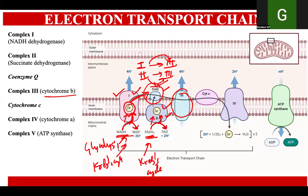Now, complex number three, which is cytochrome B, has the electrons. One important thing to note here is that while this extraction process and transportation of electrons is happening, there is movement of protons from the mitochondrial matrix into the intermembrane space. This is being driven by the energy carried by the electrons.